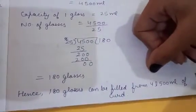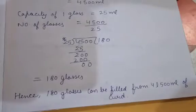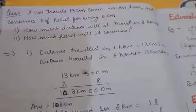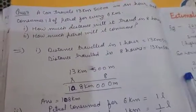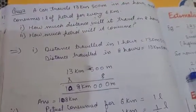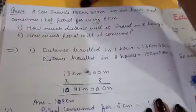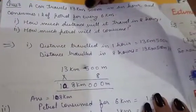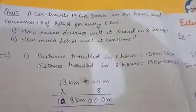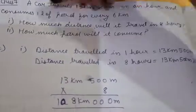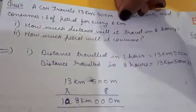Now move to question 7 — students will try question 6. A car travels 13 kilometers 500 meters in an hour and consumes 1 liter of petrol for every 6 kilometers. We need to find how much distance it will travel in 8 hours and how much petrol it will consume.